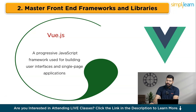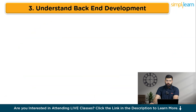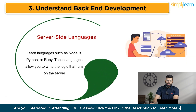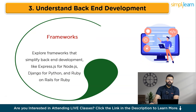With a strong grasp of front-end frameworks and libraries, you are now equipped to create engaging and dynamic user interfaces. Next, we will explore backend development to understand how to manage server-side operations and databases. After mastering the front-end, it's essential to understand backend development, which involves handling server-side operations, databases, and application logic. You can cover server-side languages such as Node.js, Python, or Ruby, which allow you to write the logic that runs on the server. You can also explore frameworks like Express.js for Node.js, Django for Python, and Ruby on Rails for Ruby.